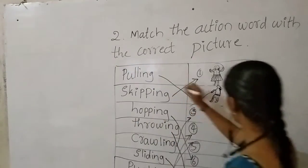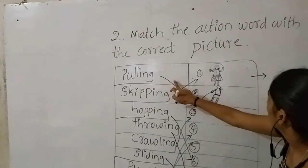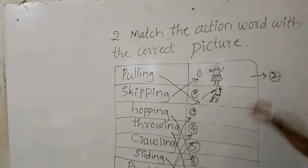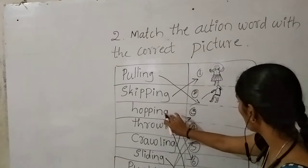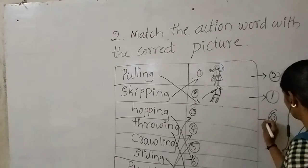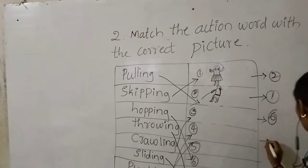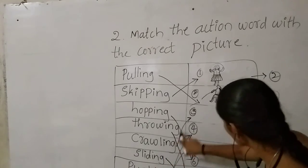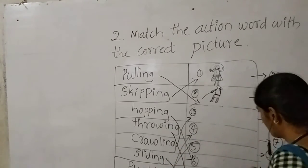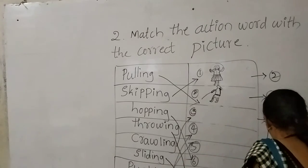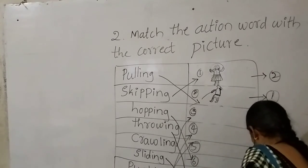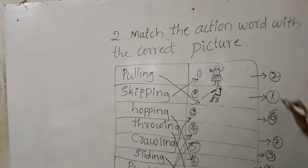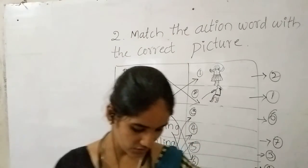Here I will write the numbers of the words. Pulling matches with the second picture. Skipping matches with the first picture. Hopping matches with the sixth picture. Throwing matches with the seventh picture. Crawling matches with the third picture. Sliding matches with the eighth picture. Pushing matches with the fifth picture. And running matches with the fourth picture. So all the things we have matched. Okay, match the following students.